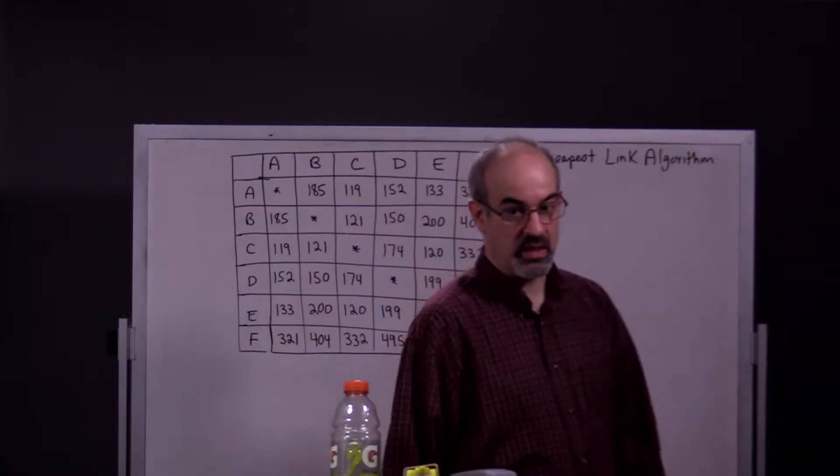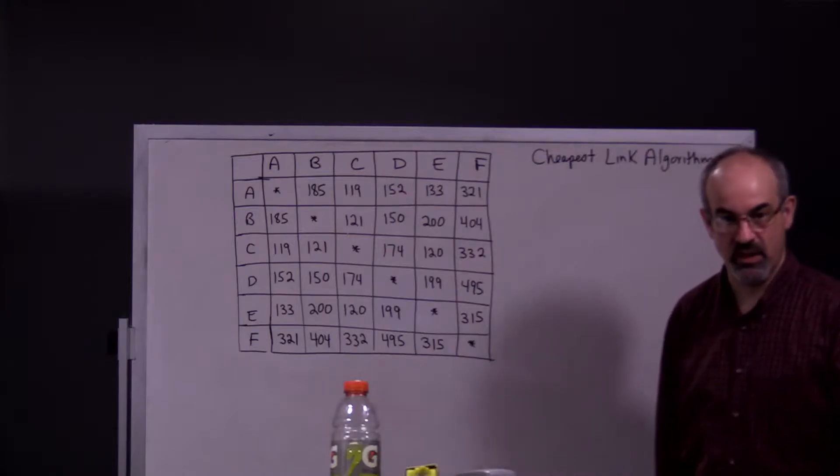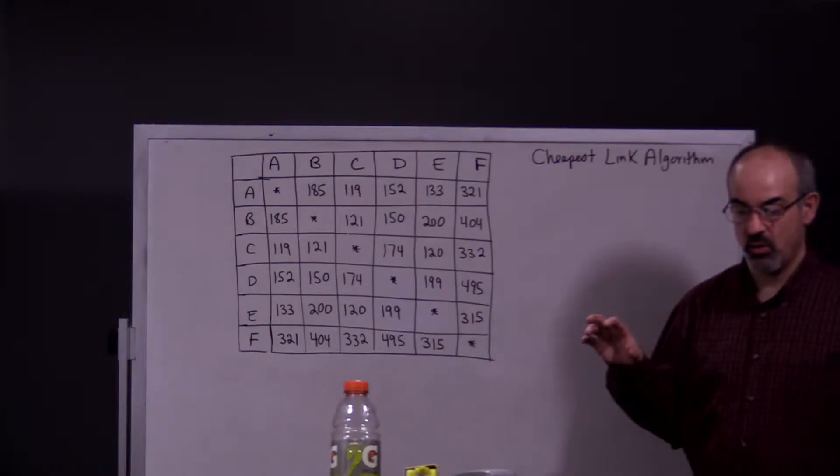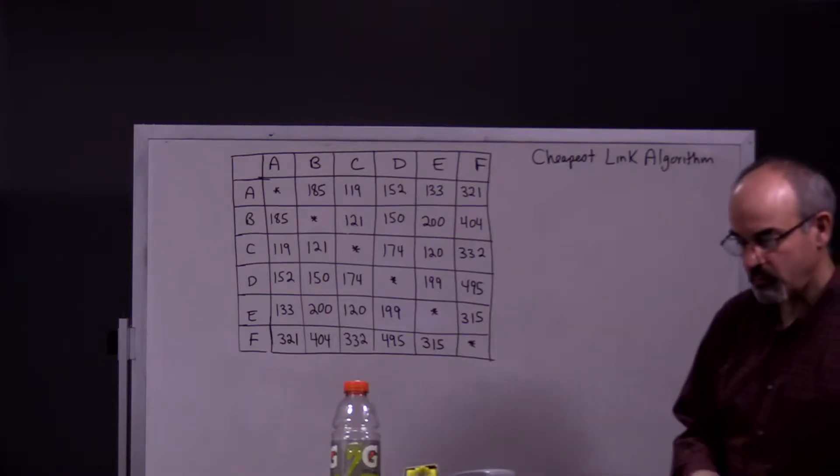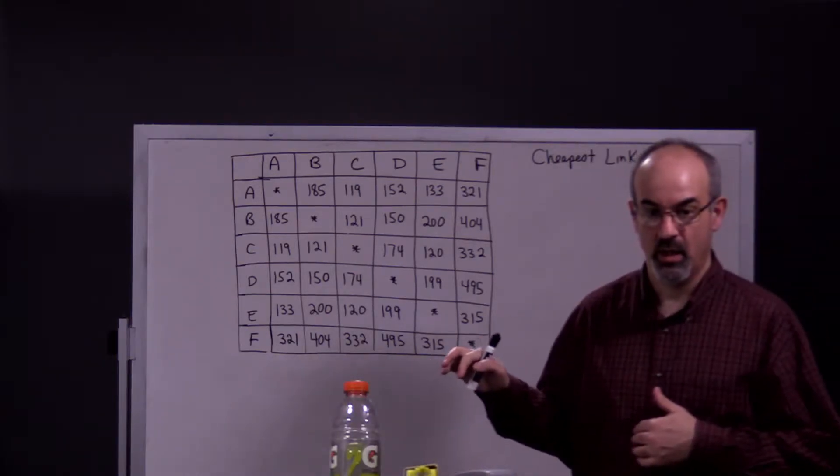For the cheapest link algorithm, we just talked about it in the last video. You're going to continually pick the edge that has the least weight and you're going to draw a picture of what you're doing.